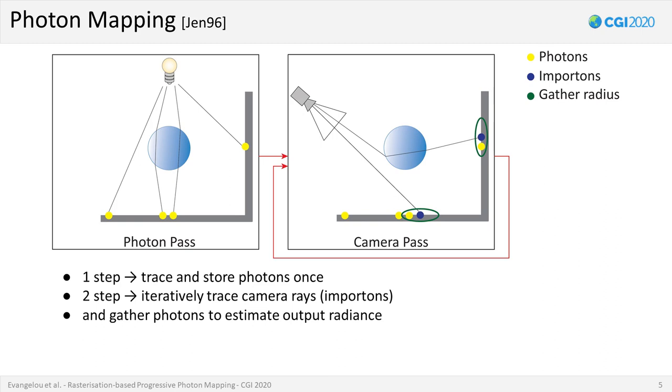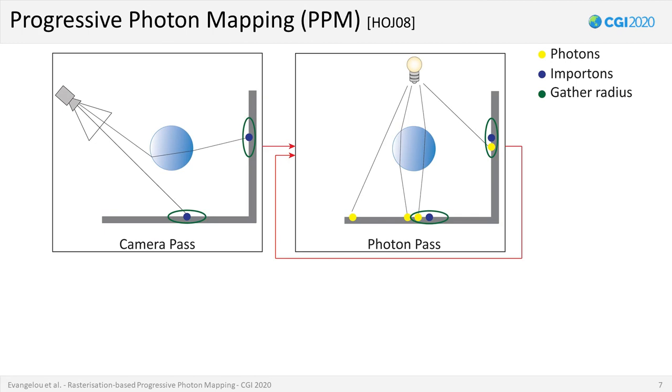In practice though, the generation of converged images requires a huge number of photons, resulting in large storage and indexing requirements. For this reason, Hatshizuka and colleagues further refined the algorithm to lift the prohibitive cost induced from photon storage. In contrast to the original method, the camera path tracing pass is invoked first, storing a number of importons dependent only on the image resolution, which represent the hit points where photon gathering is going to occur.